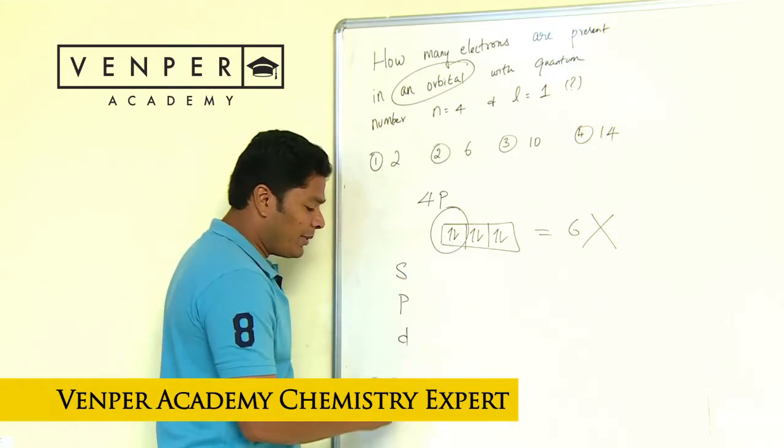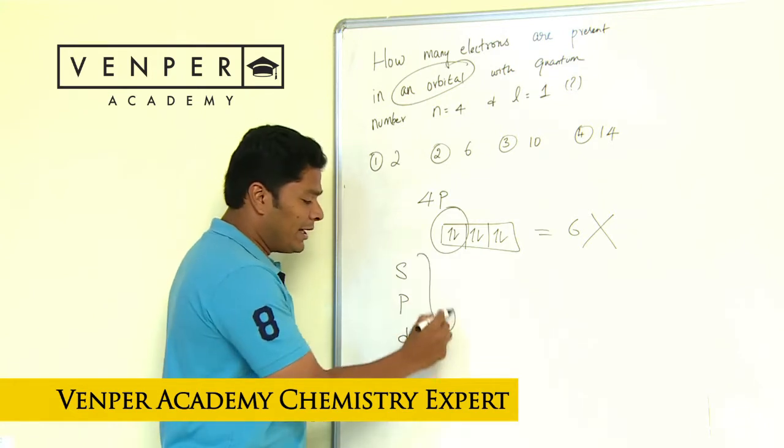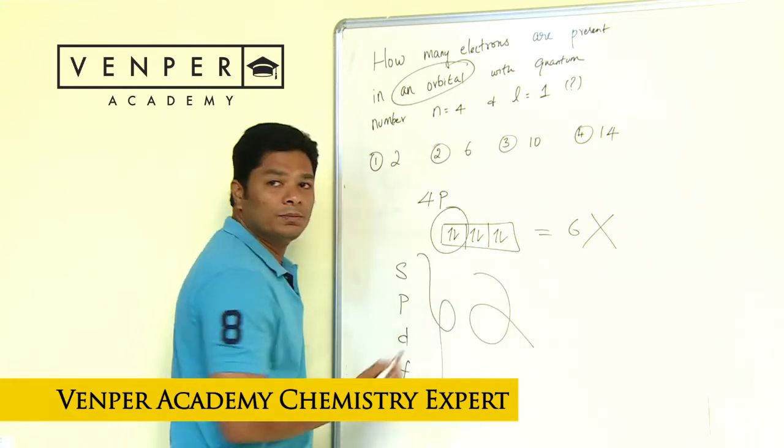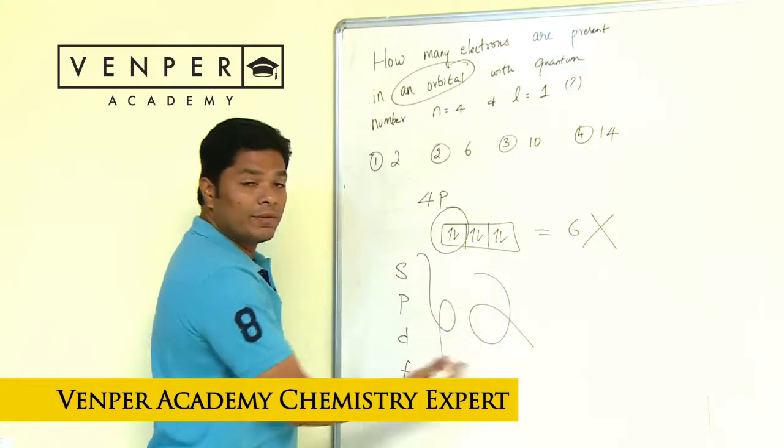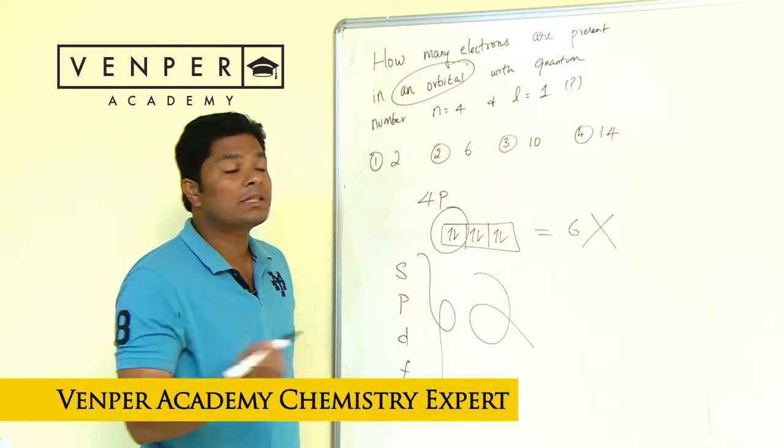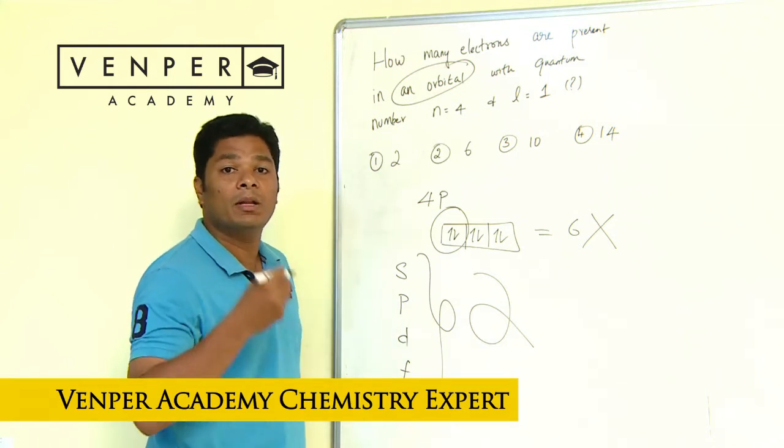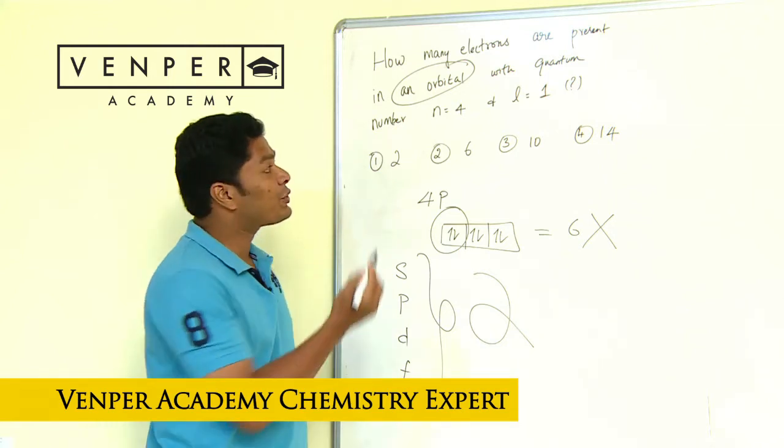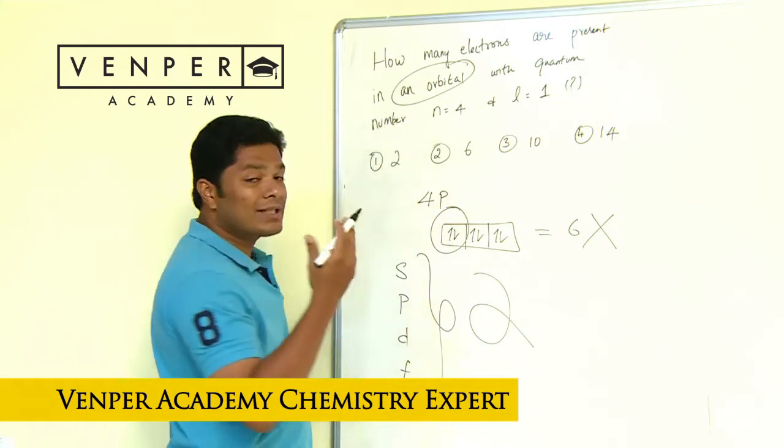It doesn't matter - s orbital, p orbital, d orbital, f orbital - in an orbital the answer is always 2. You don't need to do any of this. The training, how it goes, is the key word. You have to circle this once you do this.